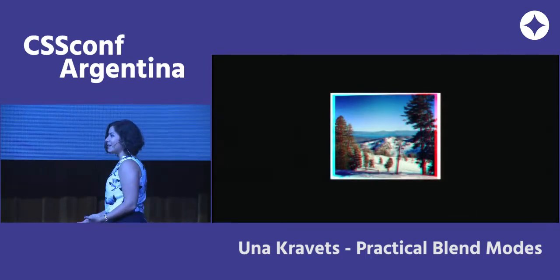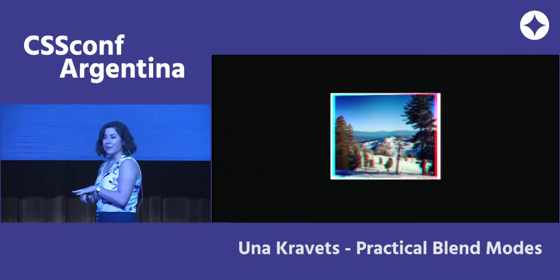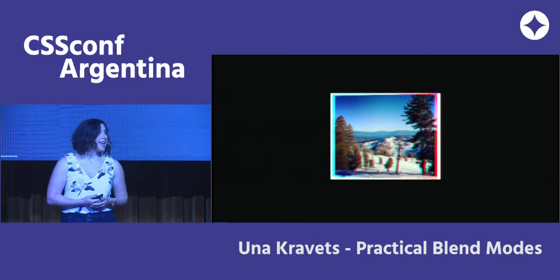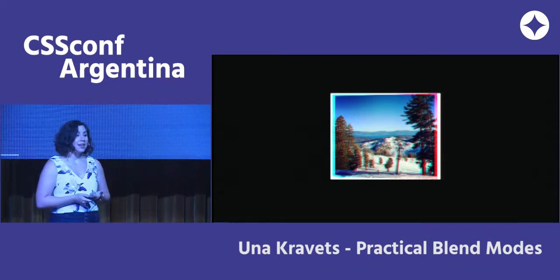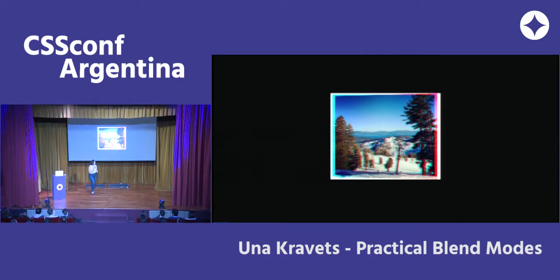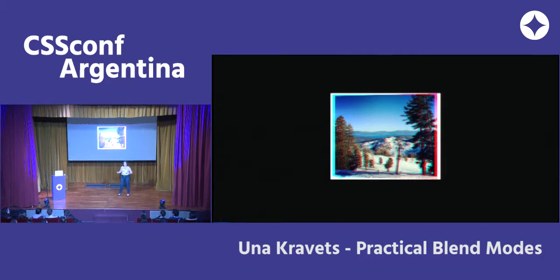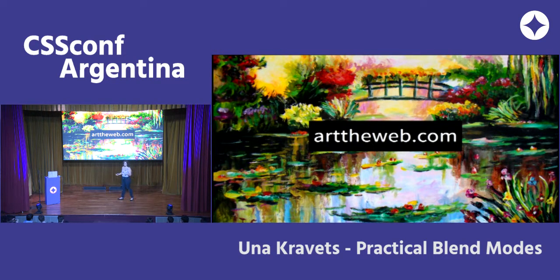You can create 3D images by applying different blend modes, putting them on top of each other, seeing how they interact, and mimicking how the eye looks at an image. Now that it's in the browser, you can interact with them, apply animation, even make 3D animated videos. If you want more information about these demos, check out arttheweb.com.